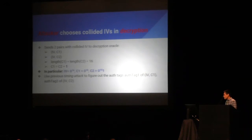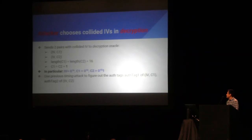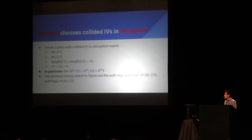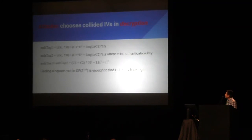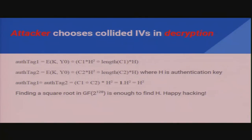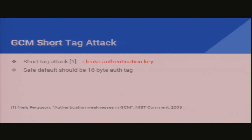The attacker chooses colliding IVs in decryption. The attacker sends two pairs: the first pair is IV and C1, the second is IV and C2, where C1 XOR C2 equals 1. In particular, choose a simple payload: IV is 0, C1 is 0, and C2 is 1. Using the timing attack, the attacker can learn the authentication tag of this pair. Writing the equation: if you XOR the two authentication tags together, you get H squared. Finding the square root in GF(2^128) — similar to the HMAC case — means you basically leak the authentication key. Thanks for your attention.